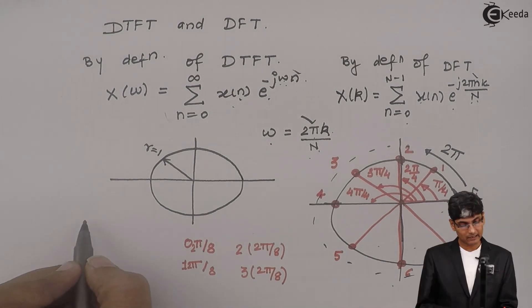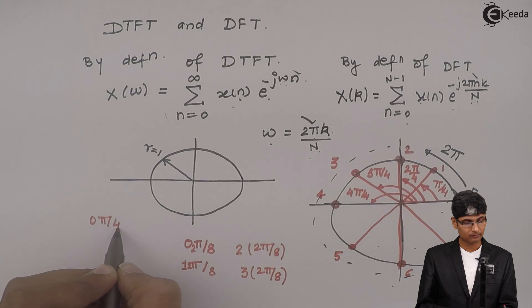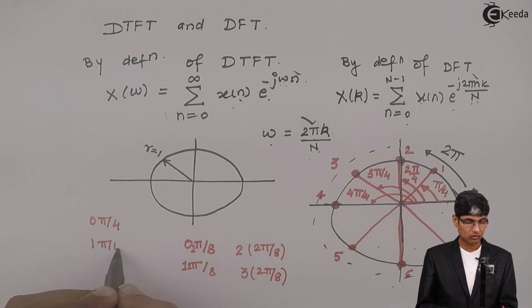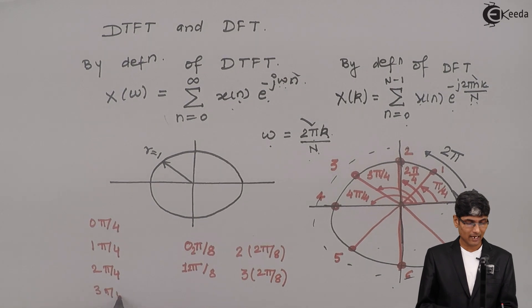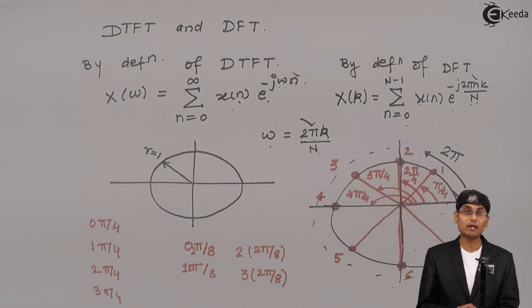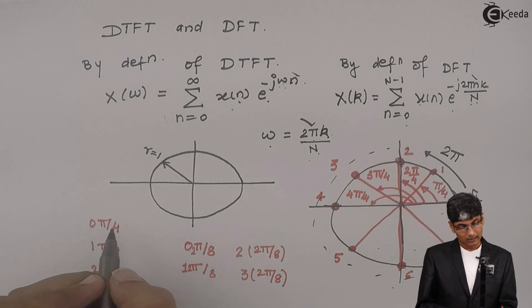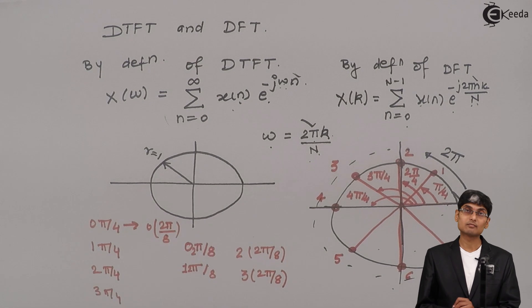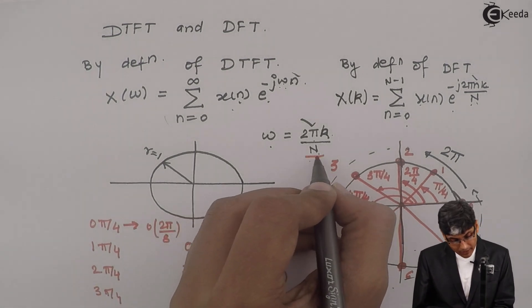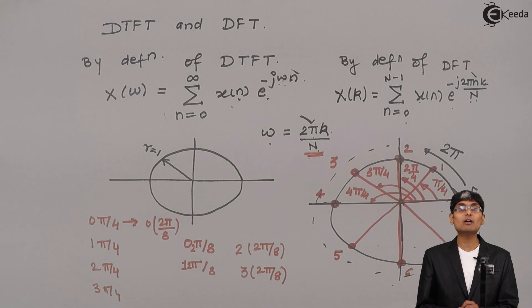Now, this 2π/8 resembles my π/4. Either I can write like this: 0·π/4, 1·π/4, 2·π/4, 3·π/4, and so on till 7·π/4. Or this same π/4 I can write as 0·2π/8. So now if you compare this 2π/8...